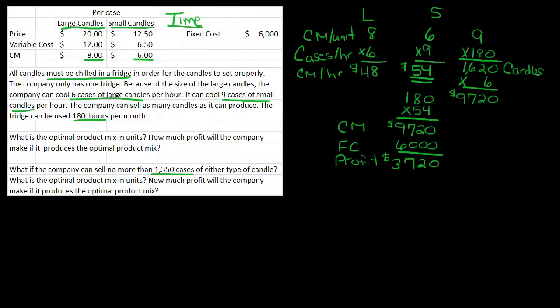Because we could have those extra candles sitting in inventory, but they're not going to generate any revenue for us. So what if instead we made 1,350 cases of small candles, maximize the revenue from that, and then use the excess capacity to make some large candles, and generate some income from that?